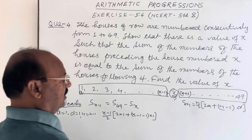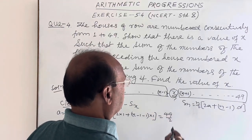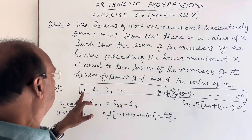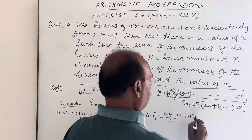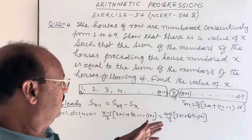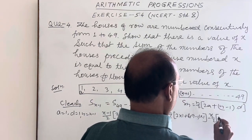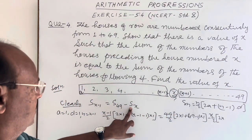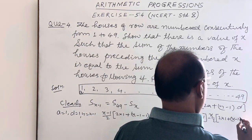For the right-hand side, S_{49} = (49/2)(2×1 + (49−1)×1) = (49/2)(2 + 48). Similarly, S_x = (x/2)(2×1 + (x−1)×1). So the full right-hand side is (49/2)(2 + 48) − (x/2)(2 + x − 1).